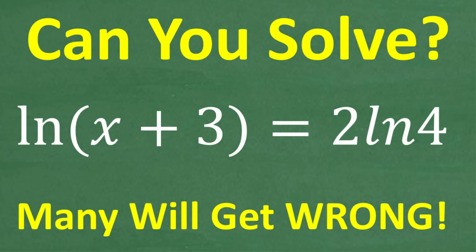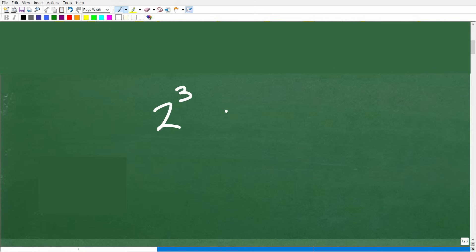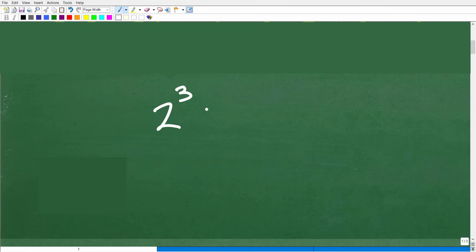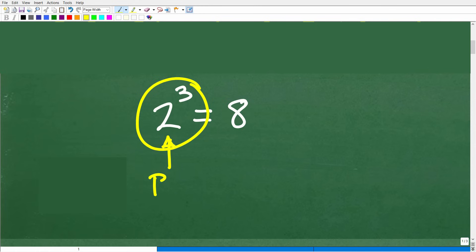Super fast — let's take an example like 2 to the 3rd power. What does 2 to the 3rd power mean? It means 2 times 2 times 2, which of course is 8. So 2 to the 3rd power is equal to 8. The 2 part is what we call the base, and the 3 part is the exponent, and the answer is 8. I want you to remember these letters: B, E, and A.